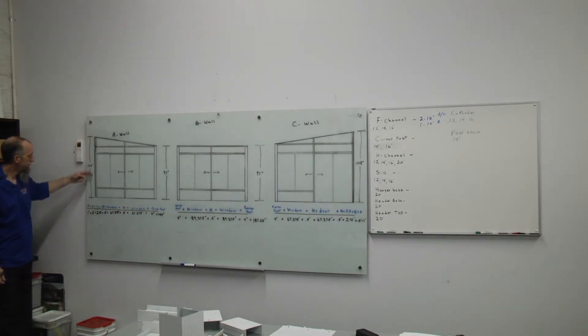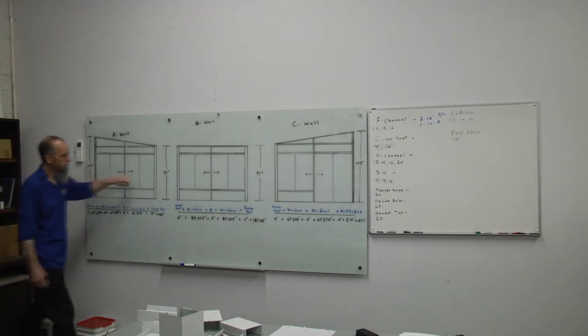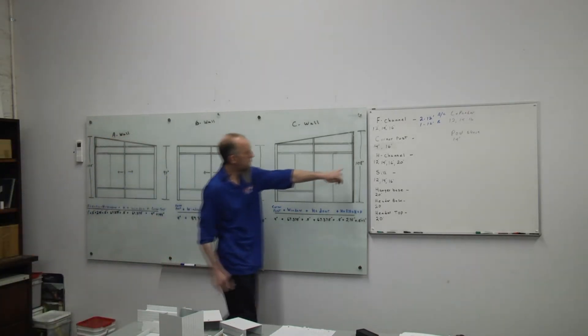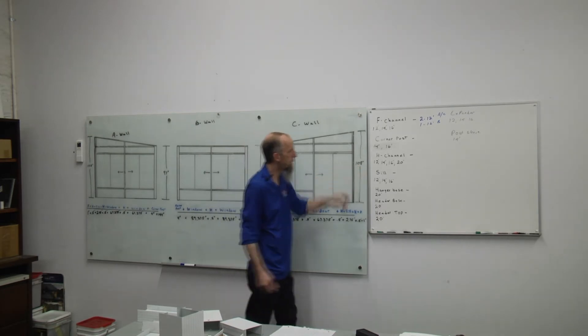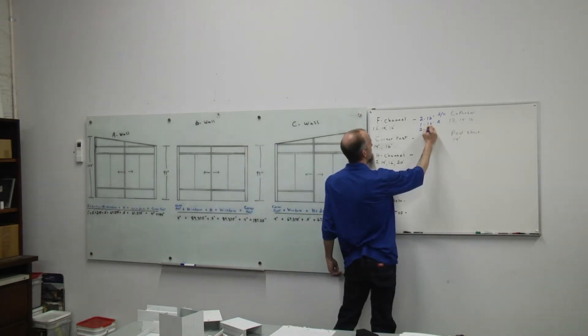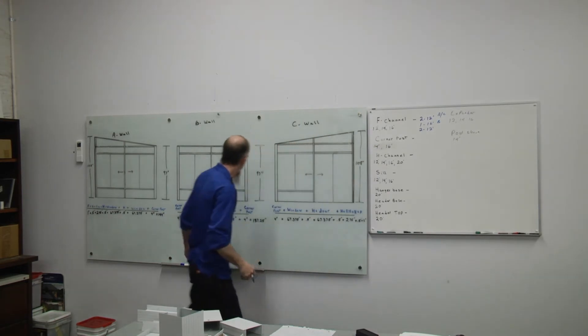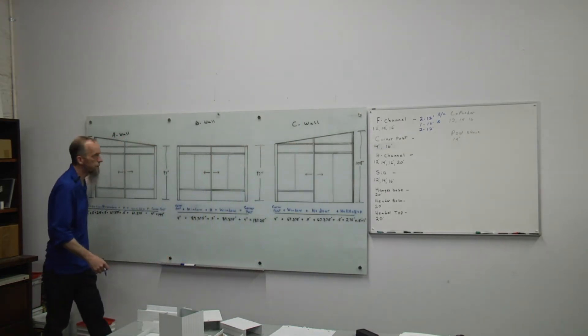We also have our F channel on the wall as a wall track. I have 108 inches. We'll have our wall track on the C wall, 108 inches. Two 12 foot pieces. One for the C wall, one for the A wall.